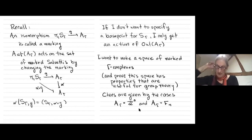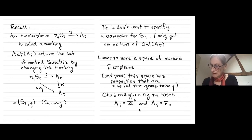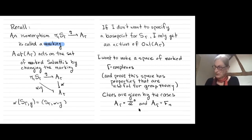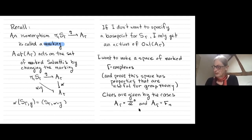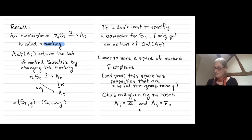Non-positive curvature means technically that the universal cover is a CAT(0) space — the metric version of non-positive curvature for spaces which aren't necessarily manifolds — where geodesic triangles are at least as thin as Euclidean ones. An isomorphism between the fundamental group of my Salvetti and my group is called a marking. A_gamma acts on the set of marked Salvetis by changing the marking.